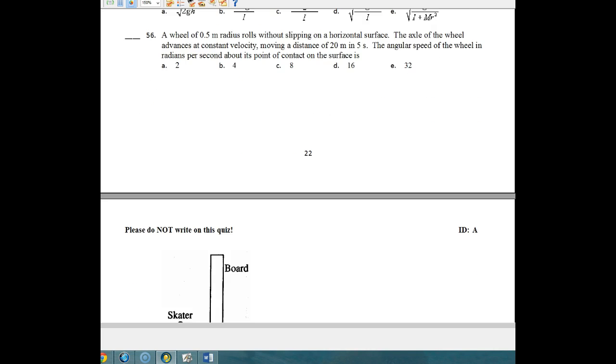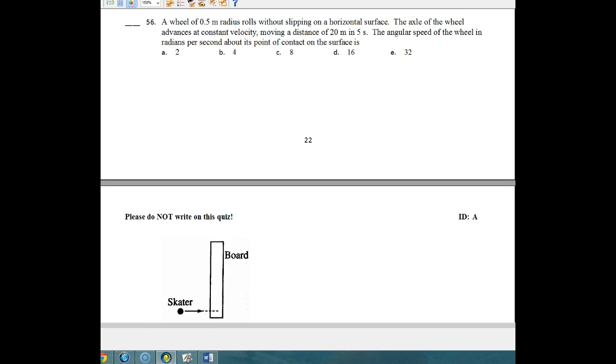Next question we need to look at is number 56. We have a wheel with a 0.5 meter radius that rolls without slipping. The axle of the wheel advances at a constant velocity, moving 20 meters in 5 seconds. What is the angular speed of the wheel in radians per second? First thing we know is the regular speed is equal to the angular speed times the radius. So let's first figure out what this speed is. We know that it's 20 meters in 5 seconds. So this is 4 meters per second. And we know that omega is going to be equal to V over R. So our V is 4. We're going to divide that by 0.5 and we're going to end up with 8 radians per second. And so our answer is 8. Pretty simple problem.